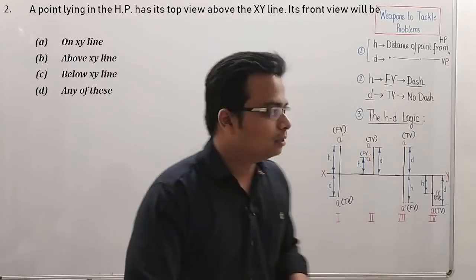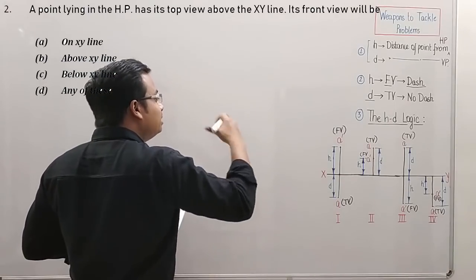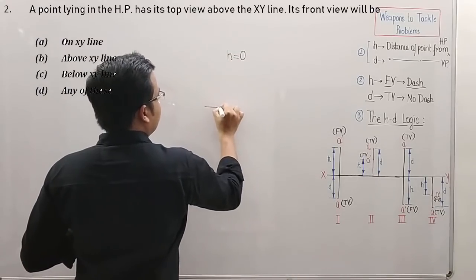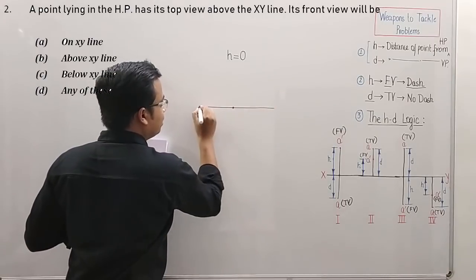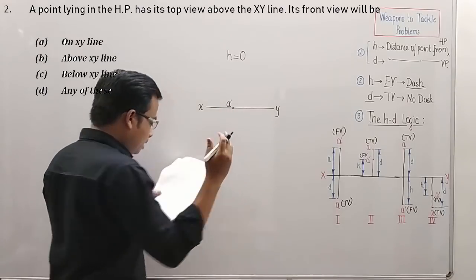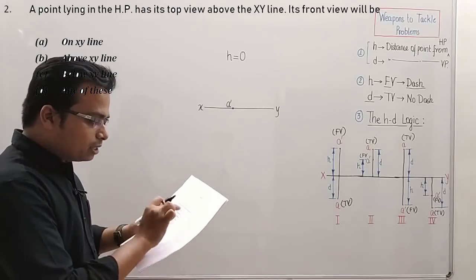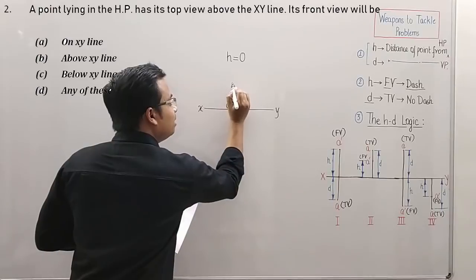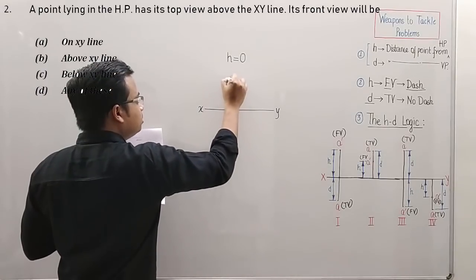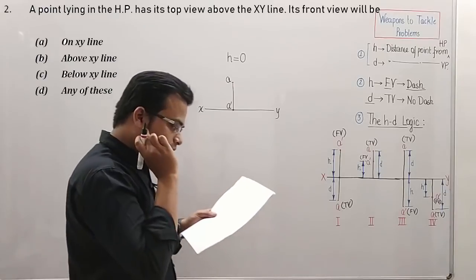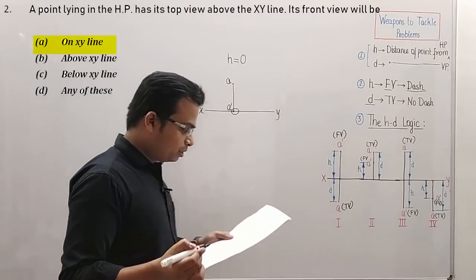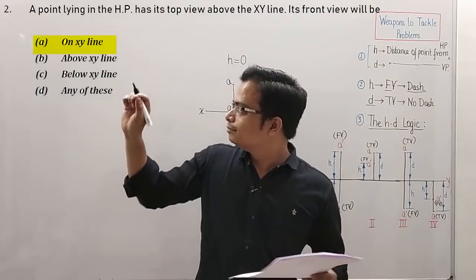Problem number two: 'A point P is in the HP; its top view is above the XY line.' If the point is lying in the horizontal plane, H equals zero. If H is zero, the front view will be right along the XY line — that's A-dash. The top view is above the XY line at some height, so we simply write A (no dash). The front view will be on the XY line, so the correct option is option A.